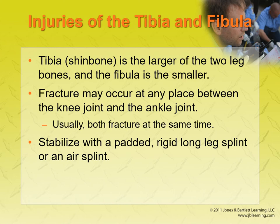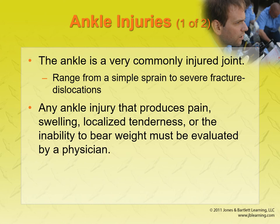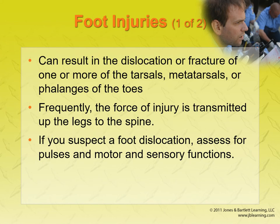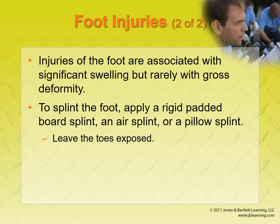Tib-fib injuries are easy to splint — you basically make a boot and wrap it, and you're good. Same for ankle injuries — you make a big boot that goes halfway up to the knee and wrap it nice and tight, making sure PMS is intact. For foot injuries, understand that if there was enough force to break the foot bone, there was enough force that could have shot up the body and been absorbed in the spine. So anytime you see a fall like that, always be thinking of spinal trauma. Splint the foot and leave the toes exposed — we need that to check capillary refill and pulses.